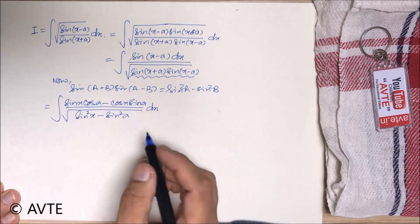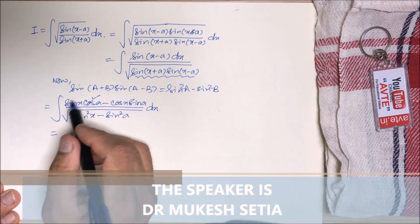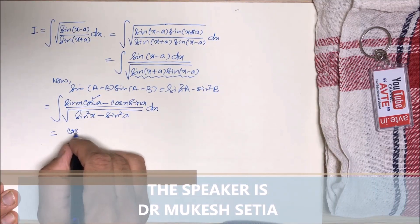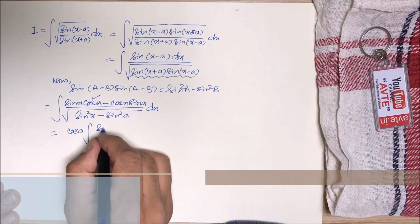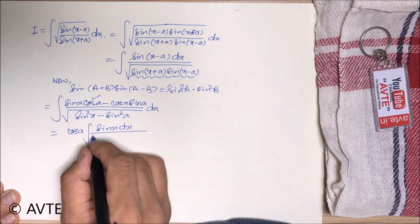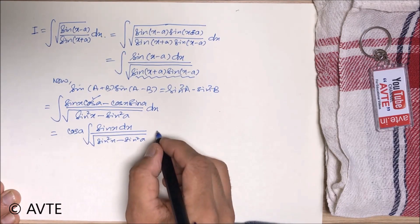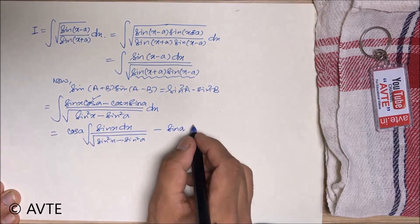And now separate this into two parts. And do not forget to write constant outside. So the first part is this and the second part is in this sin a will come outside.